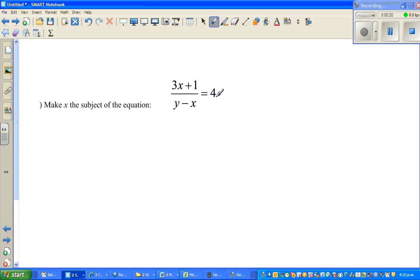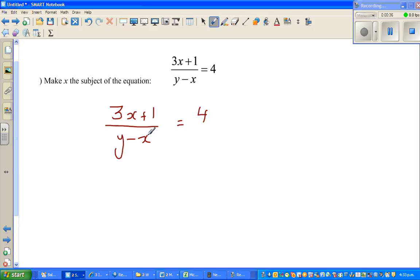To make x the subject we need to isolate the x's on one side. The first thing I'm going to do is write the equation: 3x + 1 over y - x equals 4. The first thing is I want to eliminate this y - x in the denominator, so I'm going to multiply both sides with y - x.